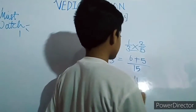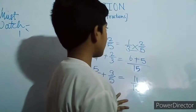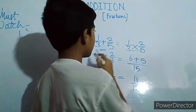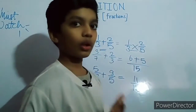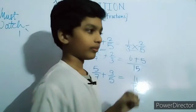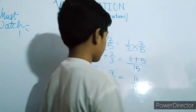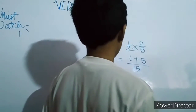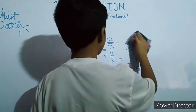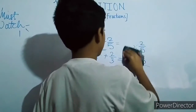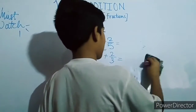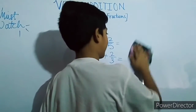So one by three plus two by five is eleven by fifteen. This is type number one, which is denominator HCF is equal to one. First example completed — eleven by fifteen.